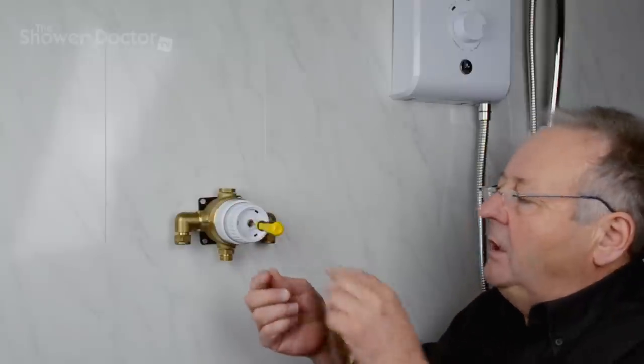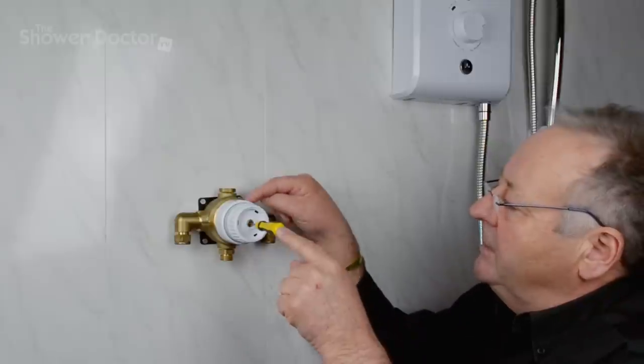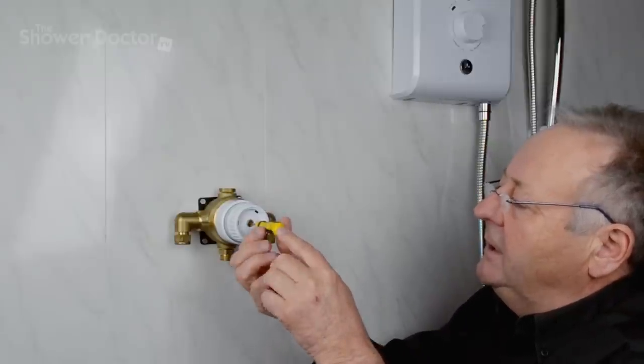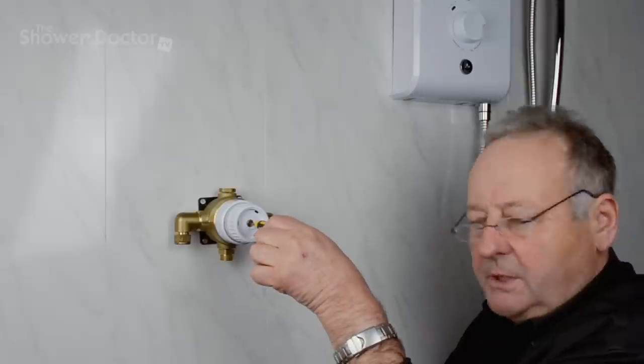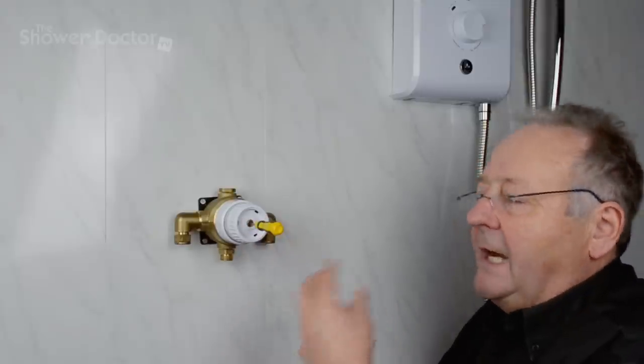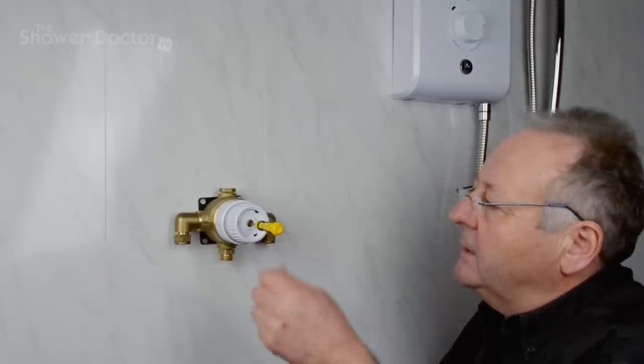make the valve hotter we unscrew the screw at the back of the shower valve here, and to make it cooler we screw it in. So that's anti-clockwise to make it hotter and clockwise to make it cooler.